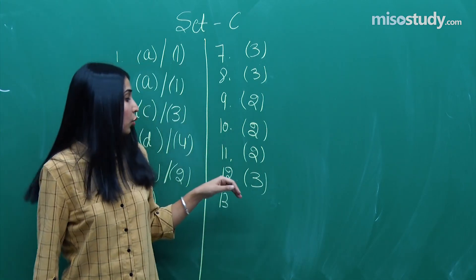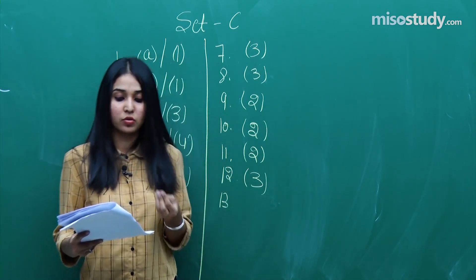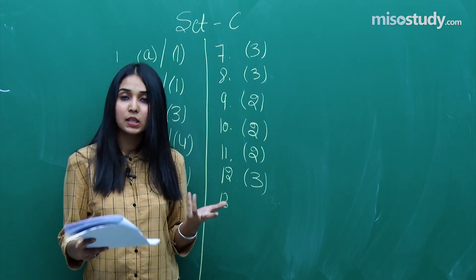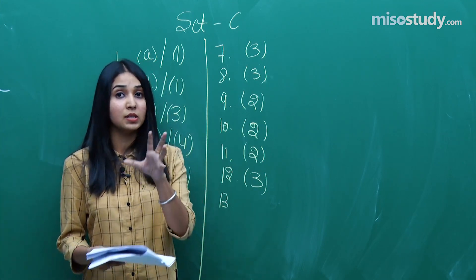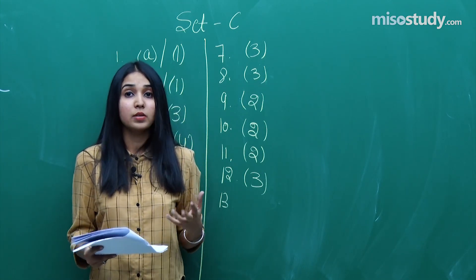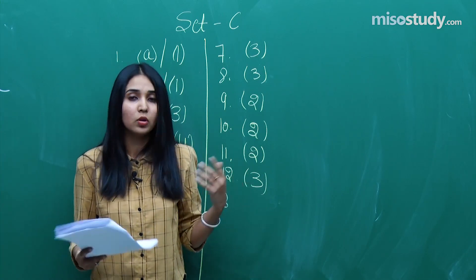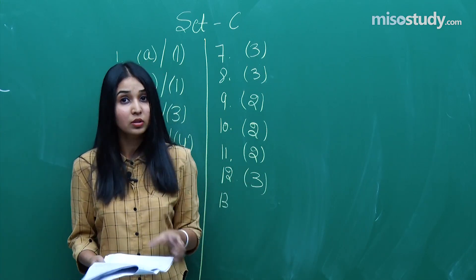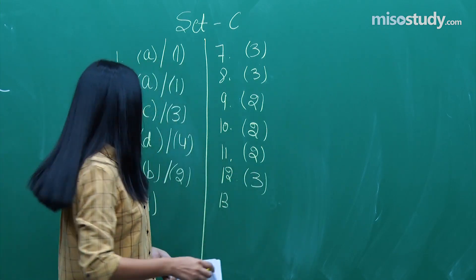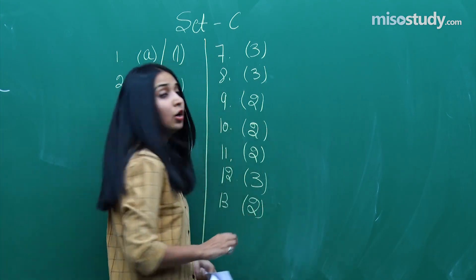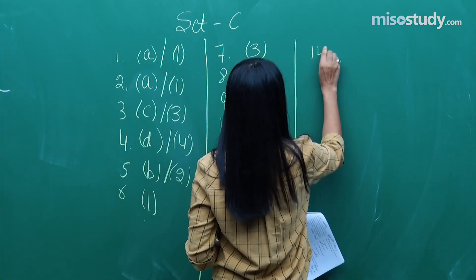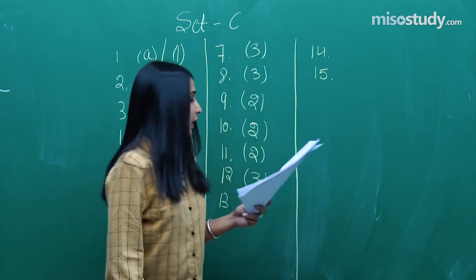Question number 13 was from the chapter on amines, and they mixed the concept of amines with GOC into it. So it wasn't a purely direct question — it was a good question combining both concepts. The answer for question number 13 is option B.